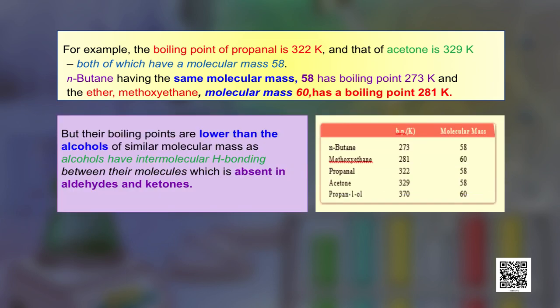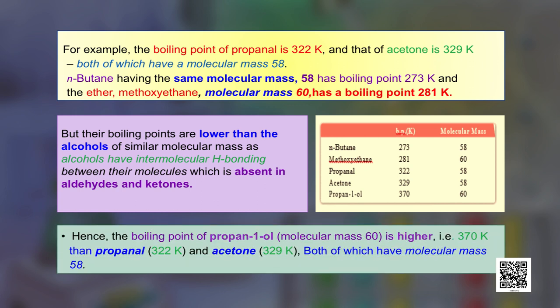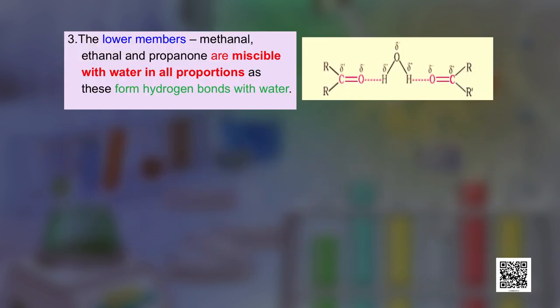A table shows these boiling point trends. However, the boiling points of aldehydes and ketones are lower than those of corresponding alcohols of similar molecular mass, because alcohols have intermolecular hydrogen bonding which is absent in aldehydes and ketones. Hence, propan-1-ol (molecular mass 60) has a boiling point of 370 K, higher than propanal at 322 K, due to hydrogen bonding.